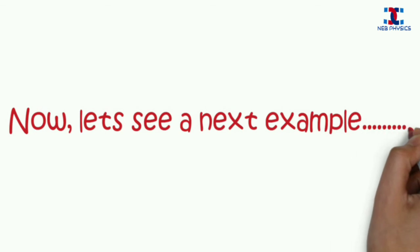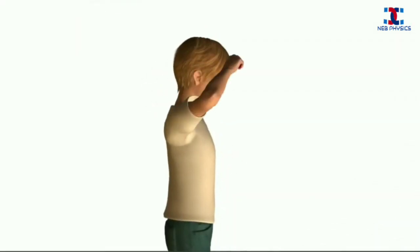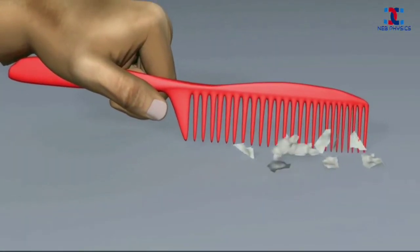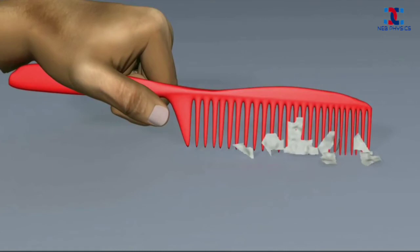Now let's see a next example. When you rub a comb on dry hair, it can attract pieces of paper. This is because the electrons from here transfer to the comb.